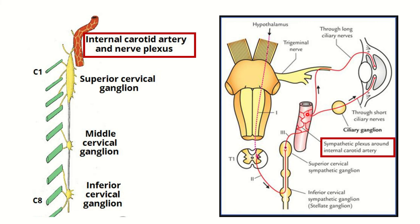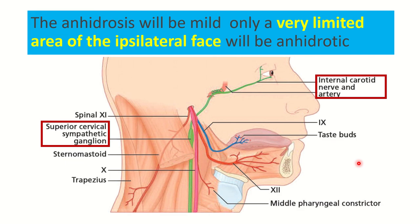From the sympathetic plexus, branches go to the eyes and other areas of the head and neck to supply the organs in that area. We can see the sympathetic nerve going to the eye and supplying it. In this picture, we can see the superior cervical sympathetic ganglia — from here the sympathetic plexus arises, and we can see the internal carotid artery with the sympathetic plexus wrapping it.